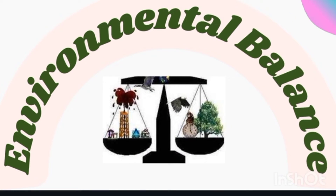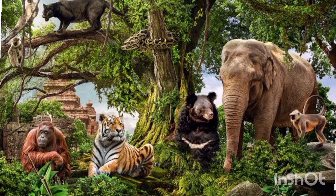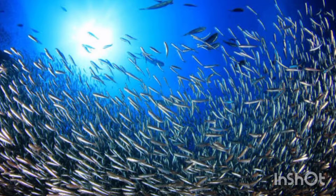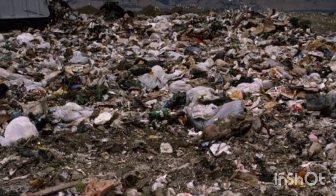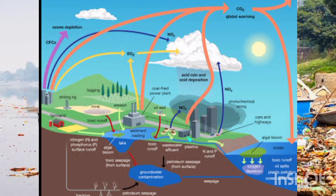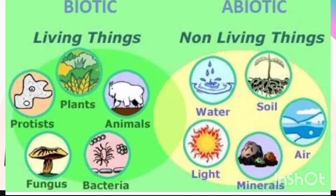In part one, we discussed that all living things — whether humans, plants, animals, insects, birds, aquatic animals, or even microorganisms — are all dependent on each other for survival. Due to human intervention in nature, large-scale changes are taking place in air, water, and land, and these non-living or abiotic components are getting polluted.